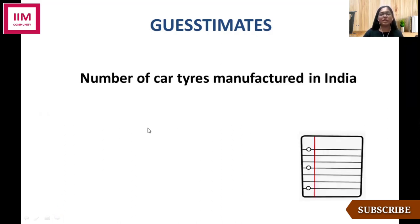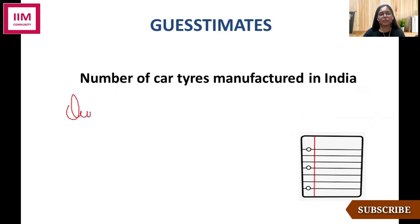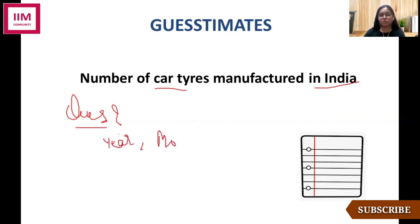Let's look at the example. So here we have this problem statement, which is: number of car tires manufactured in India. Now just after looking at it, there are several questions that might come to my mind that I need to clarify with my interviewer. The very first thing that comes to my mind is: it's car tires manufactured in India, but what time period? Are they talking about a year, a month, or a week? Let's say I asked this clarifying question and my interviewer says it's a year. So I have: number of car tires manufactured in India in a year.